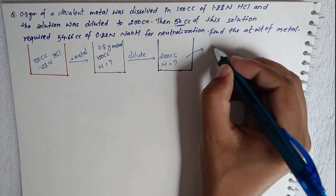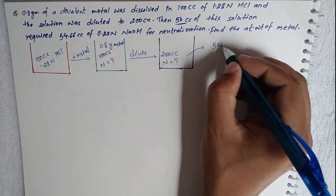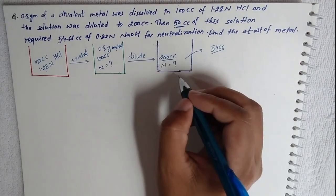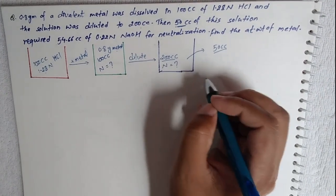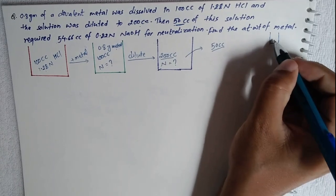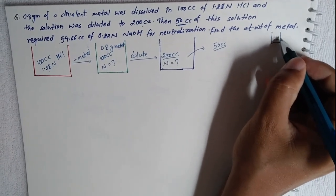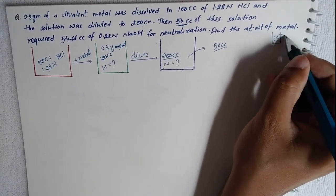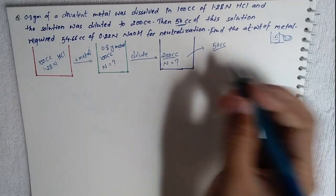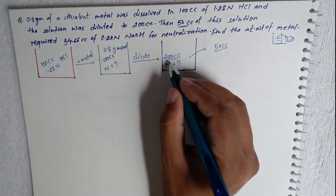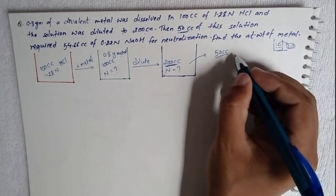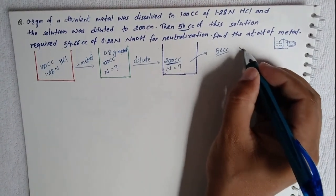50 cc of this 200 cc solution is taken. The concentration of 50 cc and 200 cc is the same — just like taking a glass from a cocoa bottle, the concentration remains the same.